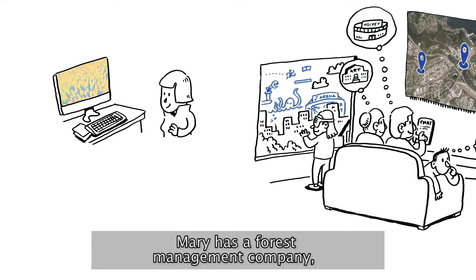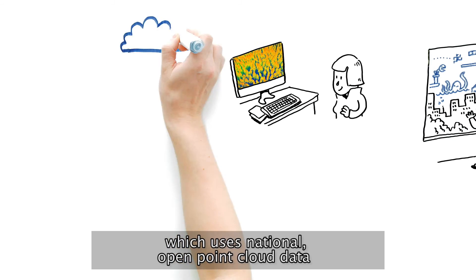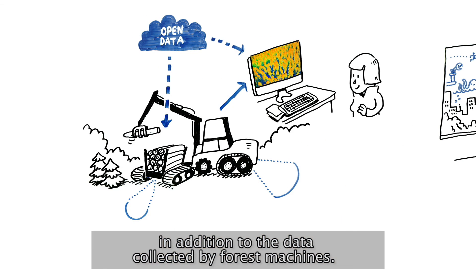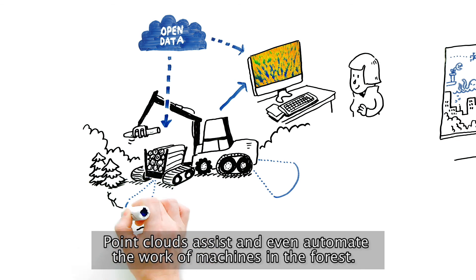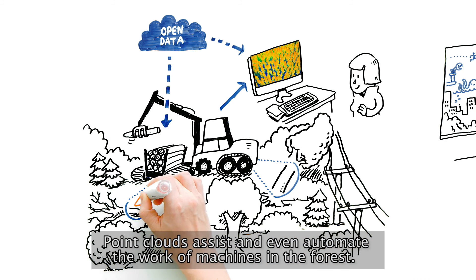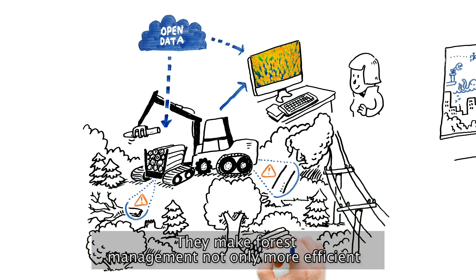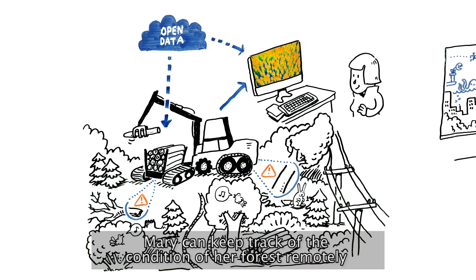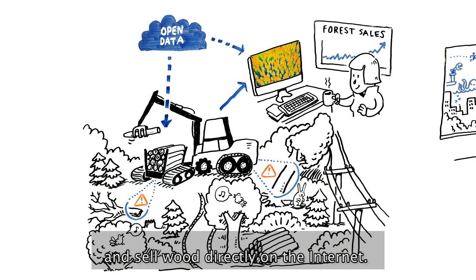Mary has a forest management company, which uses national, open point cloud data in addition to the data collected by forest machines. Point clouds assist and even automate the work of machines in the forest. They make forest management not only more efficient, but also more ecological. Mary can keep track of the condition of her forest remotely and sell wood directly on the Internet.